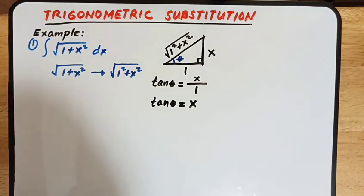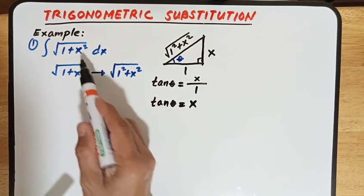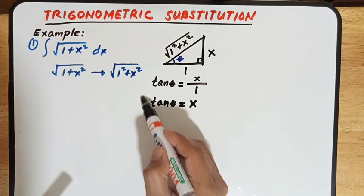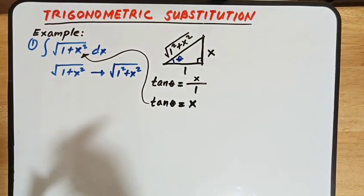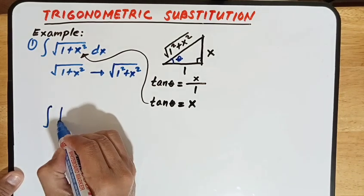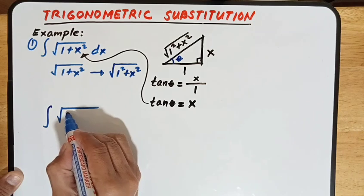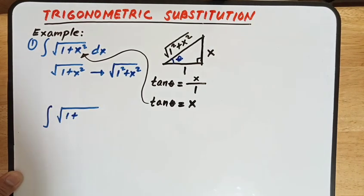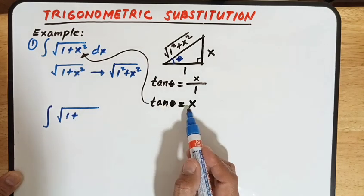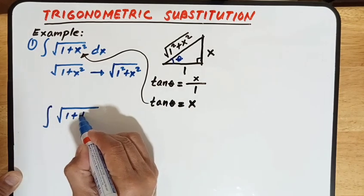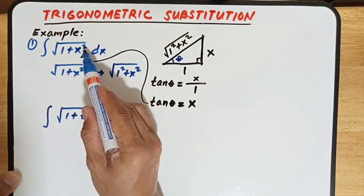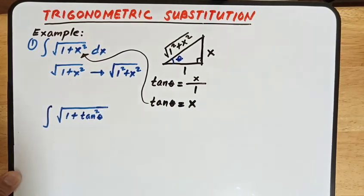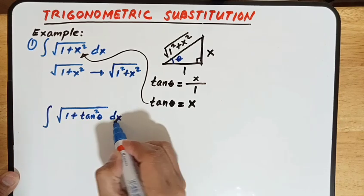So we can substitute: instead of writing x here, we use tangent theta. Therefore, we can write our integral as the integral of the square root of 1 plus tangent squared theta, times dx. Take note that this differential must be in terms of theta to match.